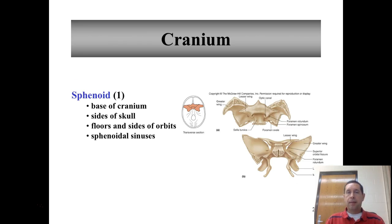Next we have the two irregular bones in the cranium — the rest are flat bones. The sphenoid bone looks kind of like a bat from the top view or a butterfly from the bottom view. It makes up the base of the cranium, the sides of the skull, the floor and sides of the orbit, and it contains the sphenoidal sinuses.